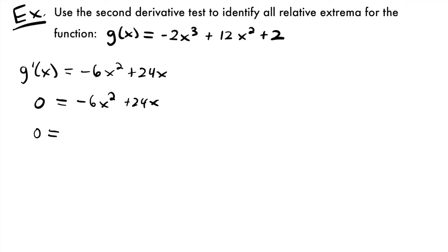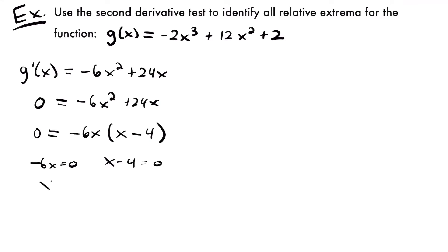We set our derivative equal to zero and solve for critical values: 0 = -6x² + 24x. I see a common factor of -6x in these two terms, so factoring gives 0 = -6x(x-4). Setting each factor equal to zero: -6x = 0 gives x = 0, and x - 4 = 0 gives x = 4. So we have two critical values, x = 0 and x = 4, which are potential points where we might have relative extrema.